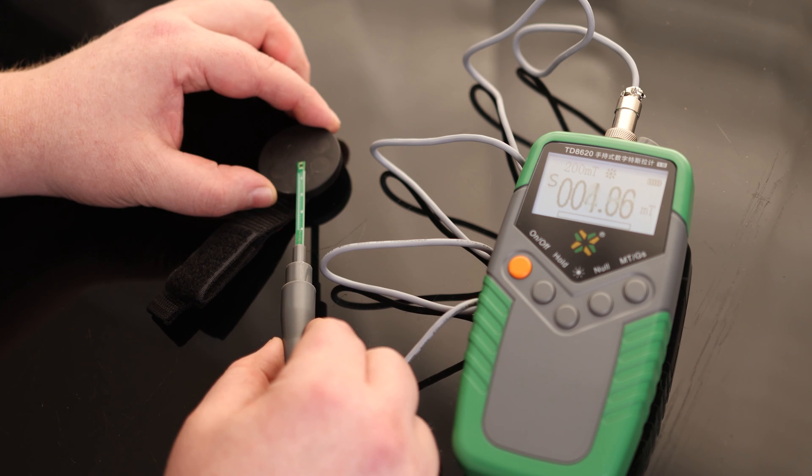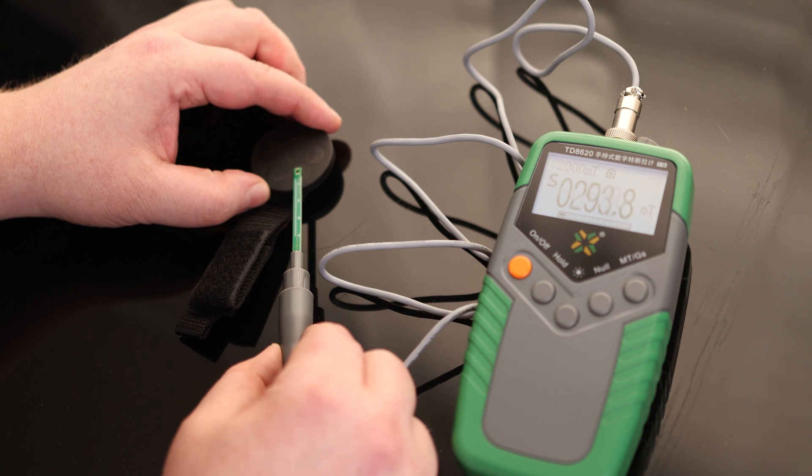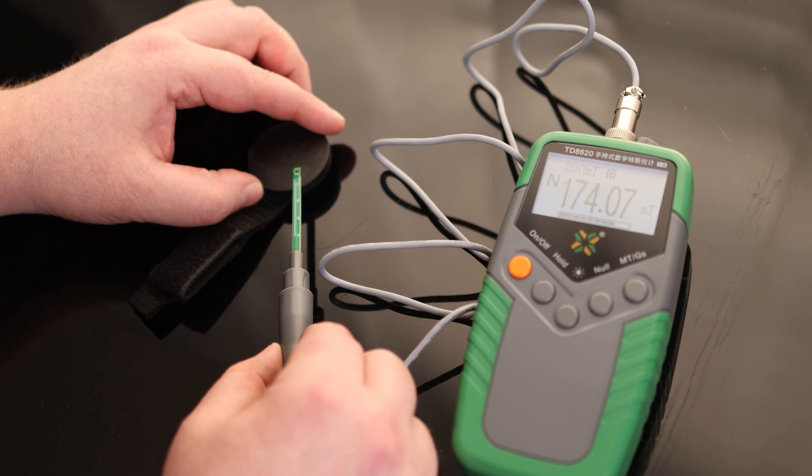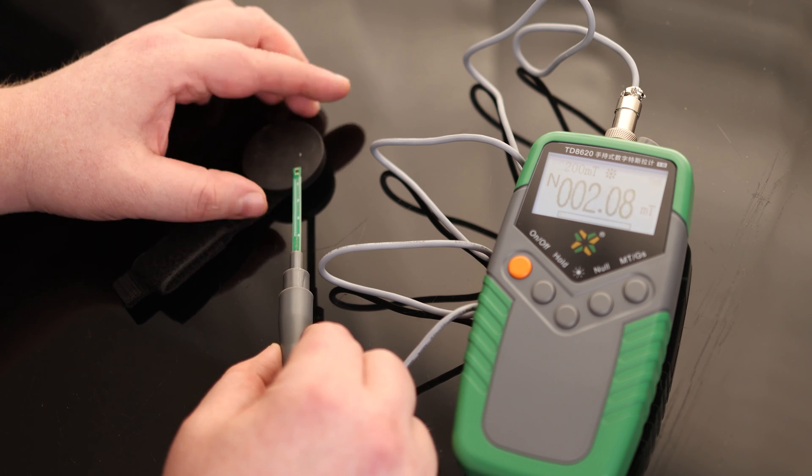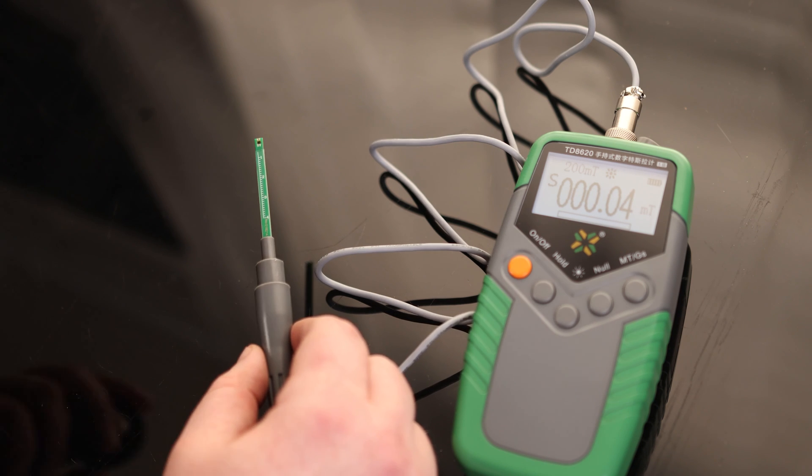So if we bring that up. Oh, nice. And it's actually telling us the pulse. So this magnet is north, which means the one next to it should be south. Yep. And the one next to that is also north and they are all reading 300 milliteslas. So now I know exactly what these magnets are.